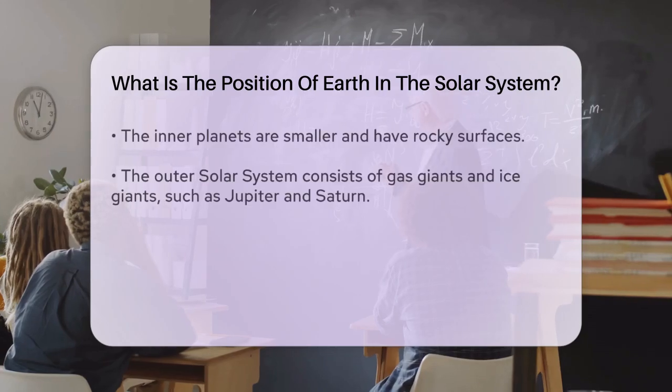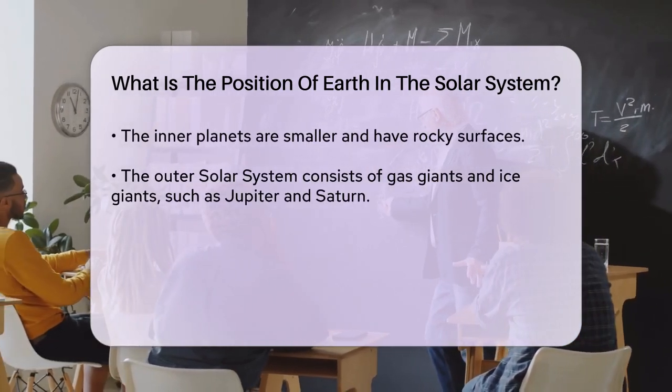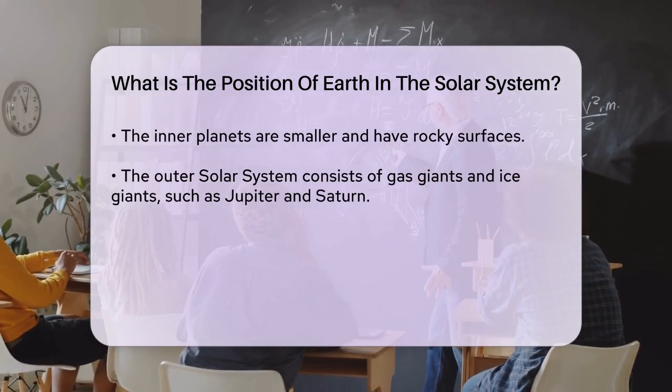In terms of its place within the solar system's structure, Earth is part of the inner solar system. This region includes the four terrestrial planets—Mercury, Venus, Earth, and Mars. These planets are all relatively small and have solid, rocky surfaces.